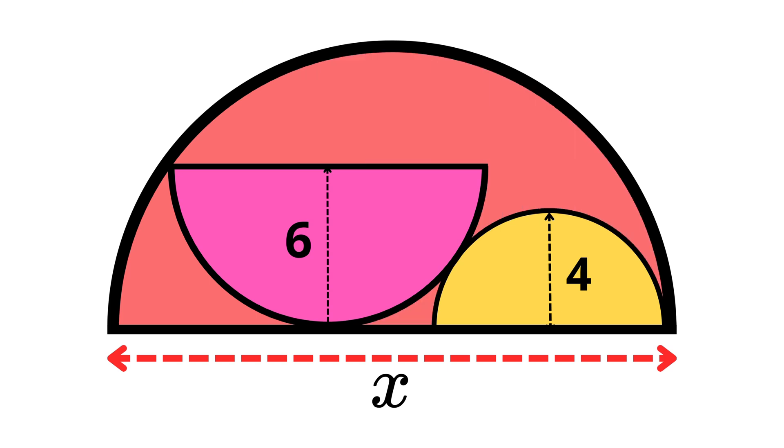Today we have a large semicircle that contains two smaller ones, one with a radius of 6 meters and the other with a radius of 4. We need to use them to find x, the diameter of the larger one.